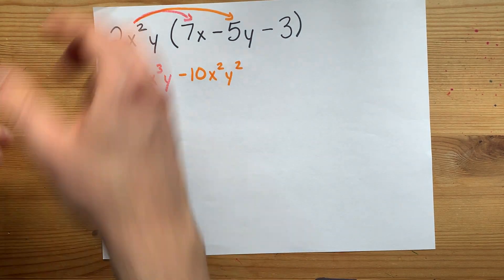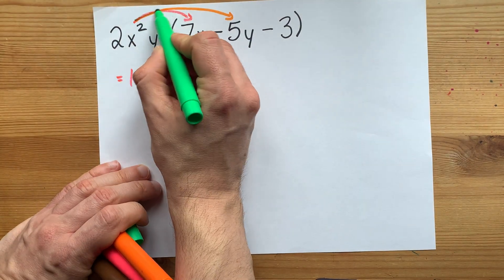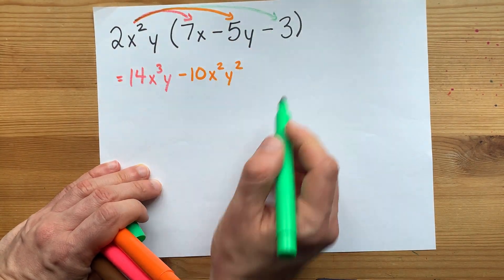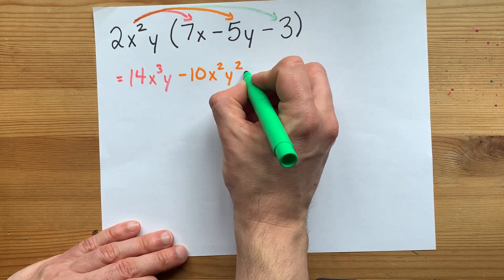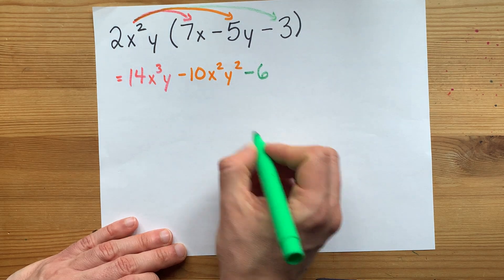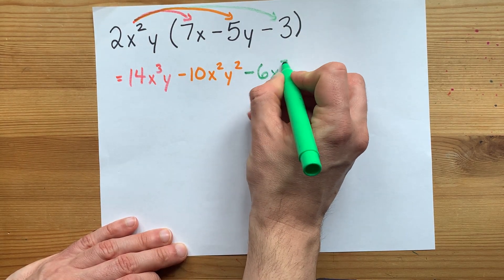And lastly, let's just keep color coding this. I'm going to multiply 2x squared y all by this minus 3. But the minus 3 only actually gets multiplied into the number. Numbers multiply by numbers. x squared y combined with no letters here. x squared y.